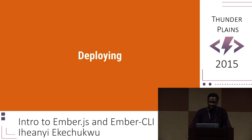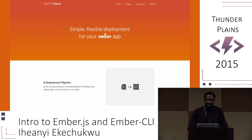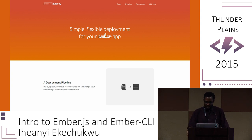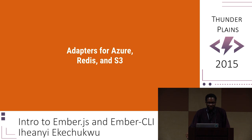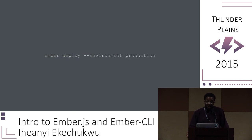Deploying front-end applications can sometimes be a pain, especially deciding whether to keep your front and back ends deployed simultaneously or separately. For keeping them separate, it's best to use Ember CLI Deploy — it uses an adapter pattern, allowing flexibility to deploy to multiple platforms like Azure, Redis, and Amazon S3. Just use NPM to install Ember CLI Deploy along with the adapter of your choice, configure it, run ember deploy --environment production, and you're good to go.